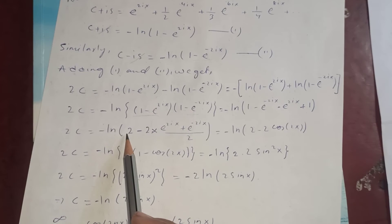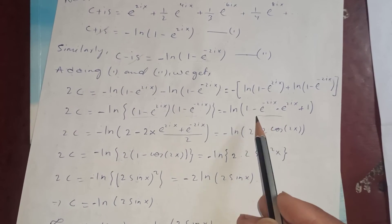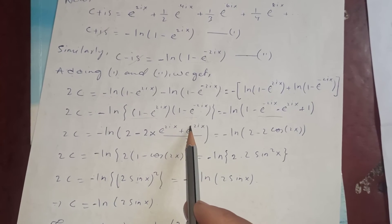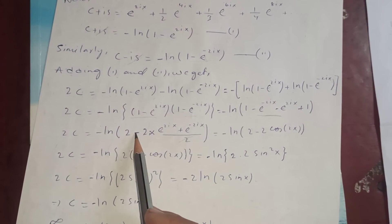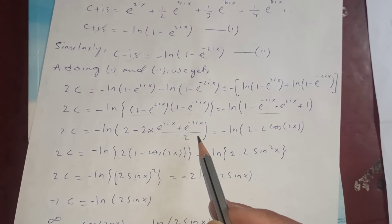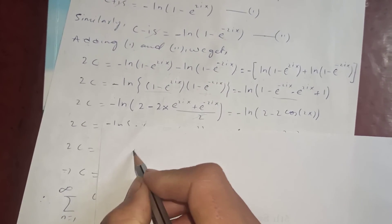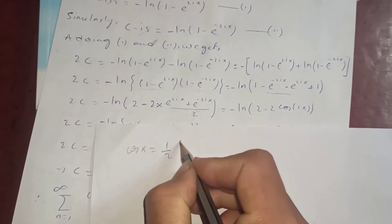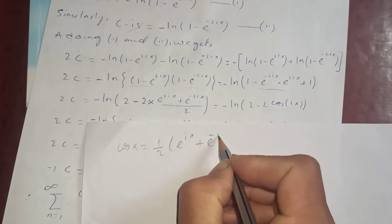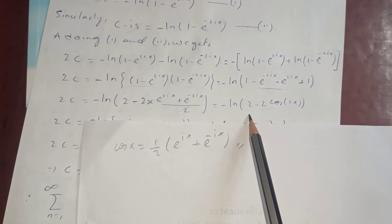So 2C equals minus log(2 - e^(2ix) - e^(-2ix)). We rearrange this as minus log of 2 times (1 - (e^(2ix) + e^(-2ix))/2). Now since cos(x) = (e^(ix) + e^(-ix))/2, here we have cos(2x), so this becomes minus log(2 - 2cos(2x)), which is minus log(2(1 - cos(2x))).